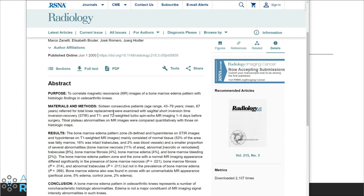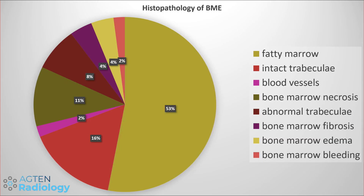Later, in a publication by Zanetti from the Balgrist hospital, they performed histopathology on knees that subsequently went to surgery for total knee replacement, examining areas that showed bone marrow edema on MRI. The results showed that in about half of those areas, histopathology revealed just normal fatty marrow. They also found intact trabeculae, blood vessels, bone marrow necrosis, abnormal trabeculae, and bone marrow fibrosis — and in only four percent was there actual evidence of bone marrow edema, along with bone marrow bleeding.